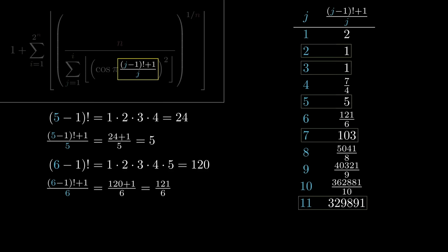When j is a prime, it seems that we always get an integer. And when j is not a prime and not 1, then we don't get an integer. And this is the secret behind Willans' formula.